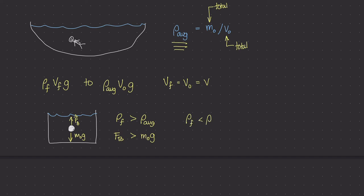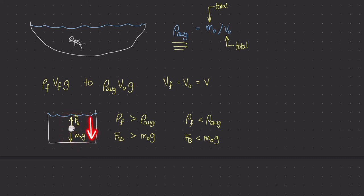If the mass density of the fluid is less than the average mass density of the person, then the buoyant force is less than the weight. The object is more dense than the fluid, so the downward force is greater than the buoyant force — the object sinks.